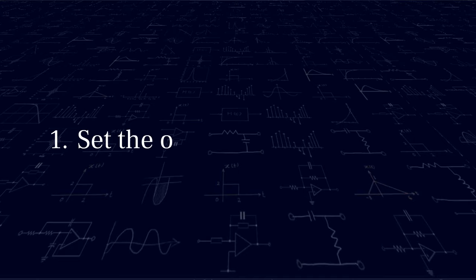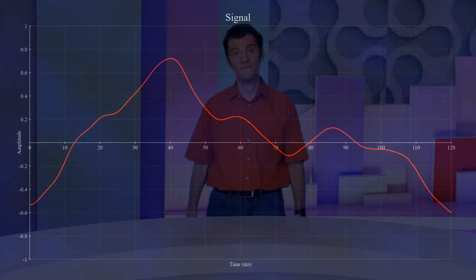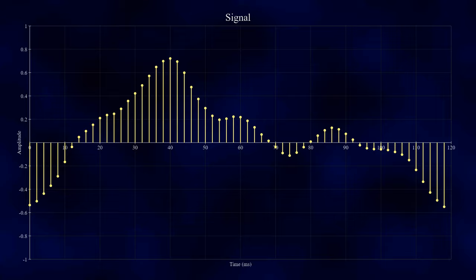Number 1: Set the optimum sampling rate. For accurate frequency analysis with the FFT, providing it with enough data to do its job is crucial, but giving it too much information will cost you increased computational load and memory usage. When you sample a signal, you are by definition throwing away some of the information about that signal. It's like taking snapshots of a scene.